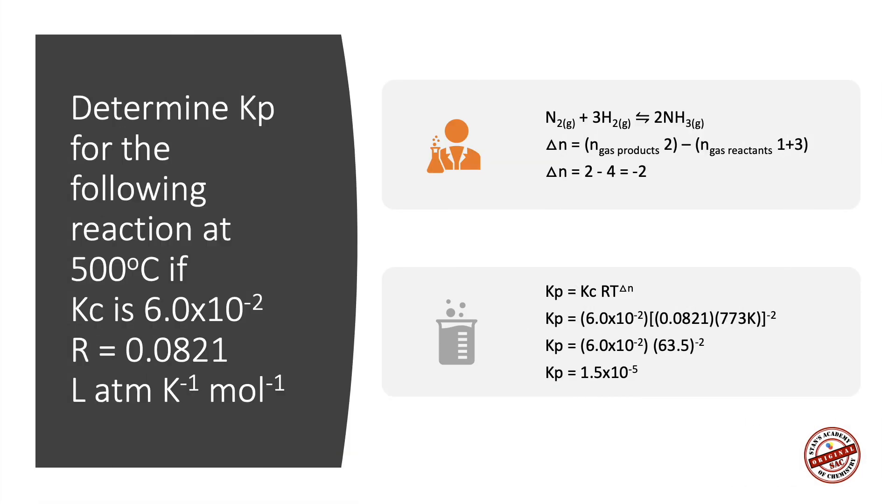Here is the problem. Determine Kp for the following reaction at 500 degrees Celsius if Kc is 6.0 times 10 to the power of negative 2, the R value is 0.0821 liter atmosphere per Kelvin per mole. The reaction is N2 plus 3H2 reversibly giving 2NH3. The value of delta N for this reaction is minus 2 as we've already calculated it.